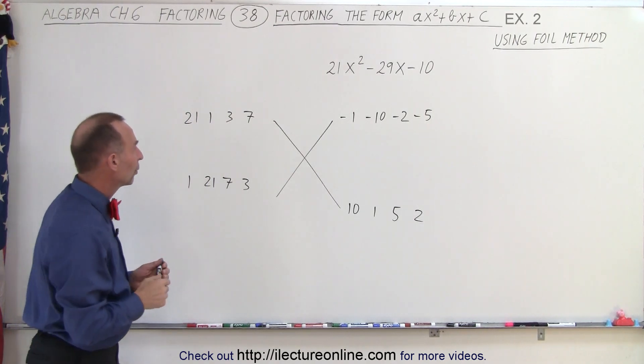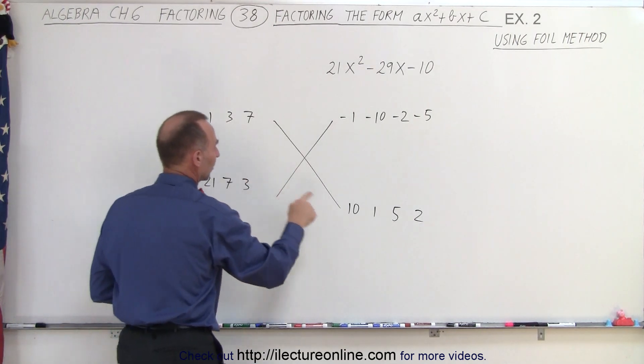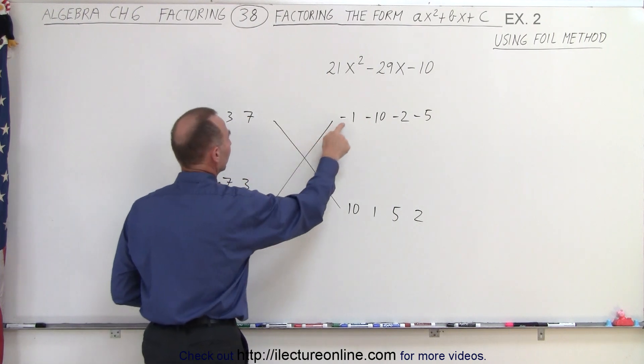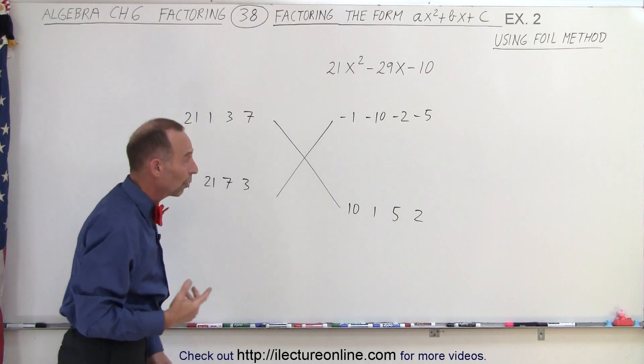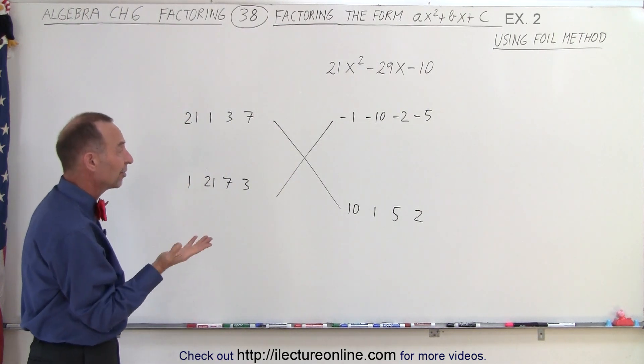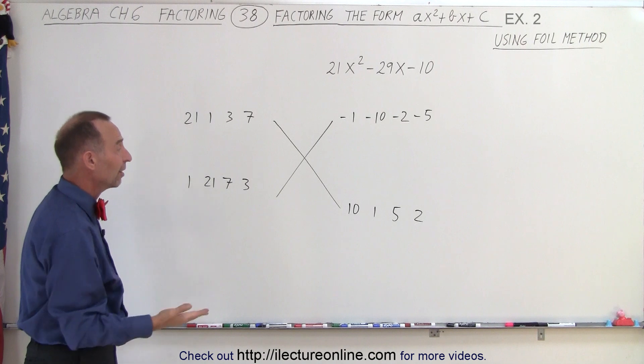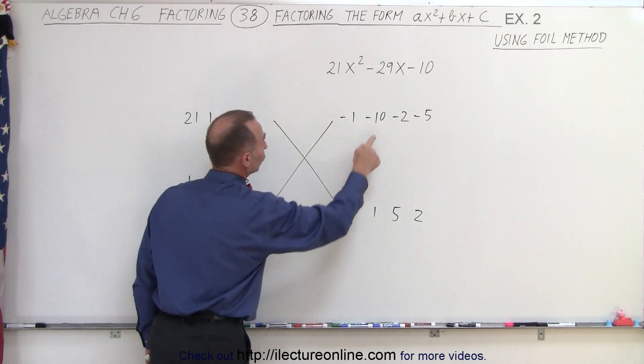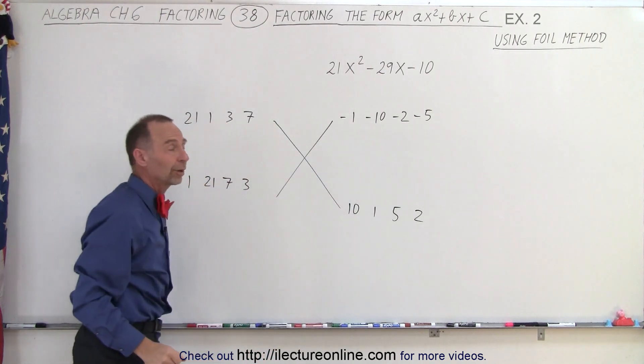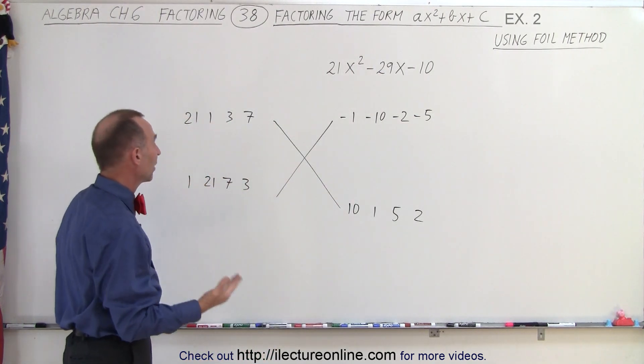Now, what we're going to do is multiply this number times this number, and this number times this number, and when we add that together, we should get negative 29. However, we could use a little intuition here because some of them are obviously not a possibility. 21 times 10 gives us 210. There's no way we're going to get down to minus 29, so that's not a viable solution.